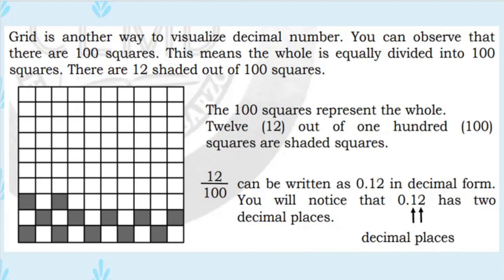12 over 100 can be written as 0.12 in decimal form. Mapapansin natin na ang 0.12 ay may 2 decimal places from the decimal point, dahil ang kabuuan ito ay 100 at ito ay may dalawang zeros. So we will read 0.12 as 12 hundredths in decimal form.